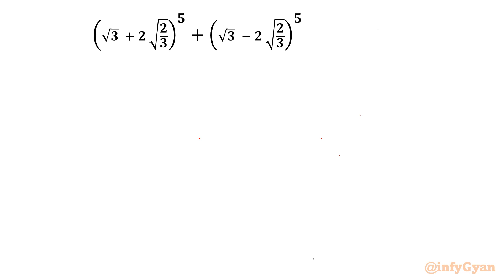Welcome back to Infigyan friends. Today in this video we are going to take up one Radical Maps challenge. It is (√3 + 2√2)/3 raised to the power 5, plus (√3 − 2√2)/3 raised to the power 5.